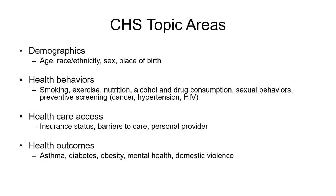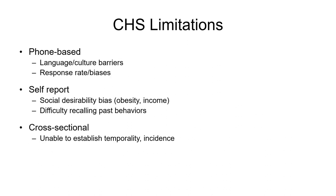These are some of the topics covered by CHS. Many topics are consistently included year after year, but sometimes new topics can be introduced or taken out depending on the health needs of the city. The limitations of CHS are the same as those of BRFSS. It is phone-based, so there may be language or cultural barriers, despite having the interview system in multiple languages. Response rates have been decreasing over time, which may be a source of bias. Due to self-report, there may be social desirability bias or difficulty recalling past behaviors. Since it is a cross-sectional survey, we are not able to establish temporality or incidence. However, because it is done every year, you can look at trends and estimates over time.